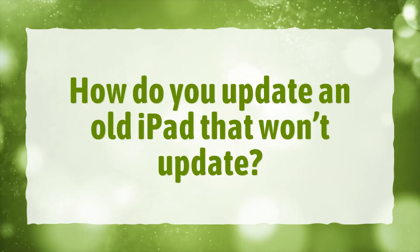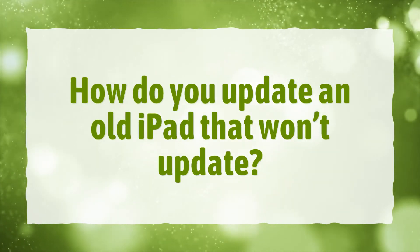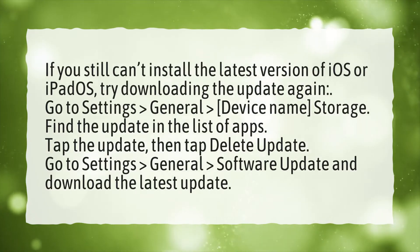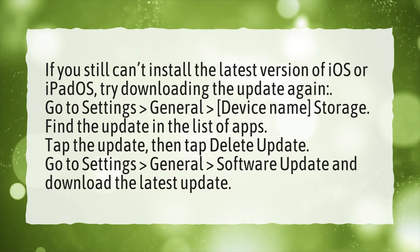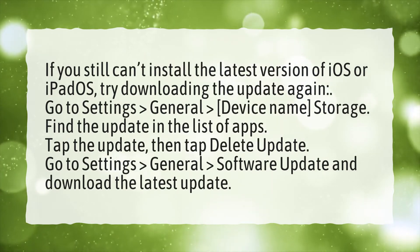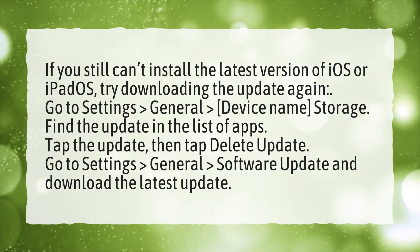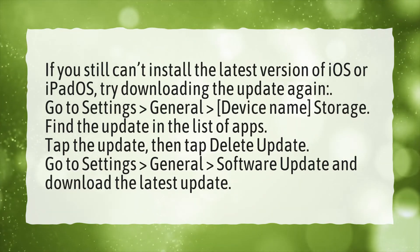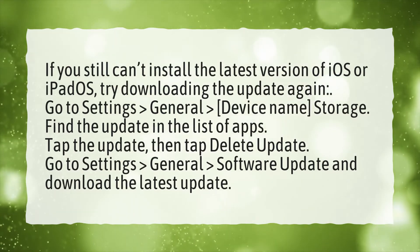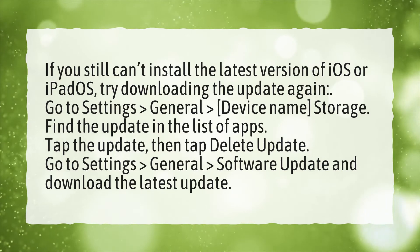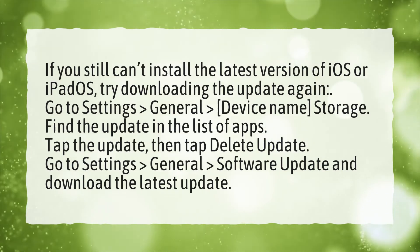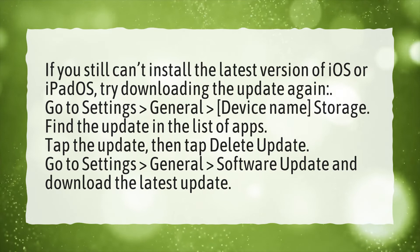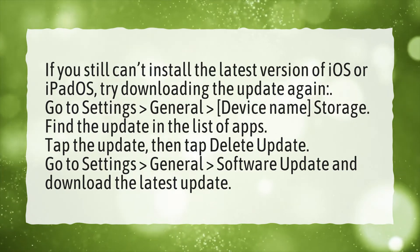How do you update an old iPad that won't update? If you still can install the latest version of iOS or iPadOS, try downloading the update again. Go to Settings, General, Device Name, Storage. Find the update in the list of apps, tap the update, then tap Delete Update. Go to Settings, General, Software Update and download the latest update.